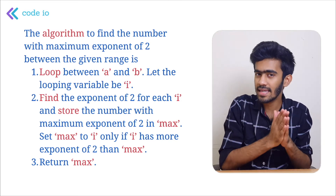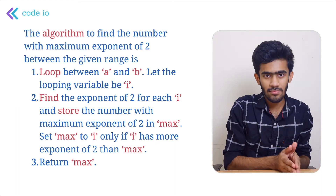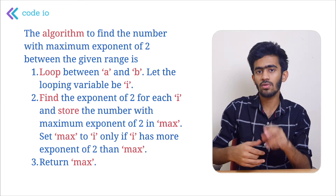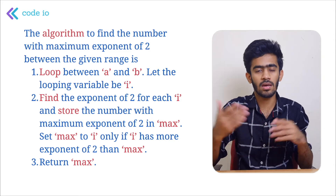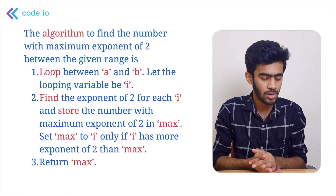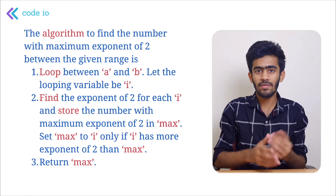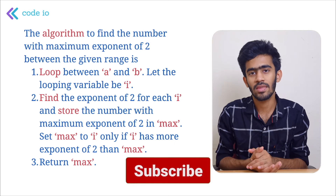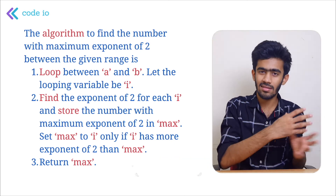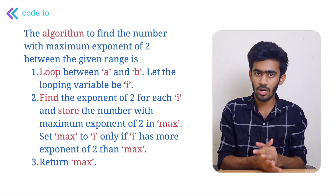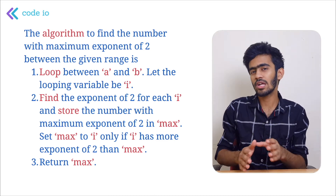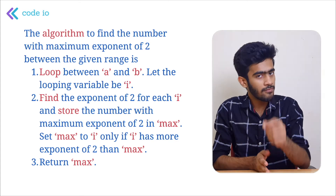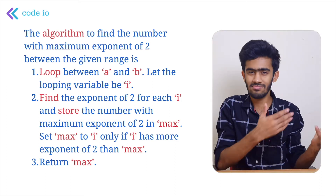Let us take the number 8. We divide 8 by 2 and get 4 — it is perfectly divisible. We divide 4 by 2 and get 2. Then 2 divided by 2 gives 1. We stop there because we cannot divide 1 by 2 and get a positive integer. So we have divided 8 by 2 three times to reach the minimum value of 1. The exponent of 2 for 8 is therefore 3. How many times we are able to divide a number by 2 perfectly is the exponent of that number.